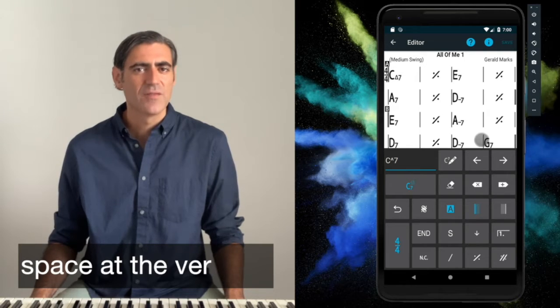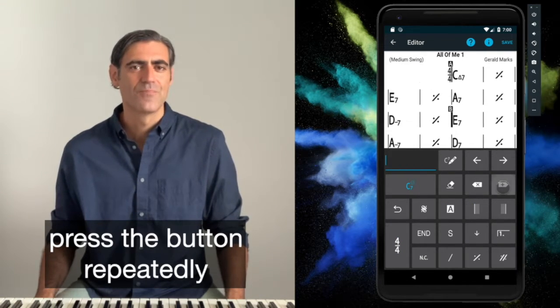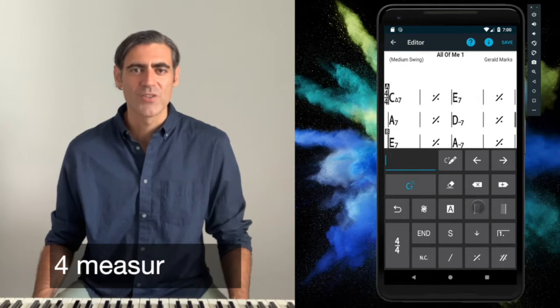Now let's insert some space at the very top. Press the button repeatedly. Let's say we create a four-measure intro.